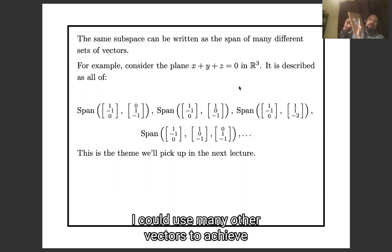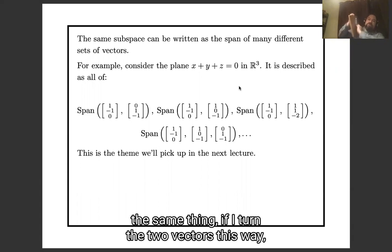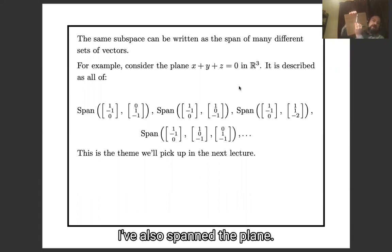I could use many other vectors to achieve the same thing. If I turn the two vectors this way, I've also spanned the plane. And I don't have to use just two.